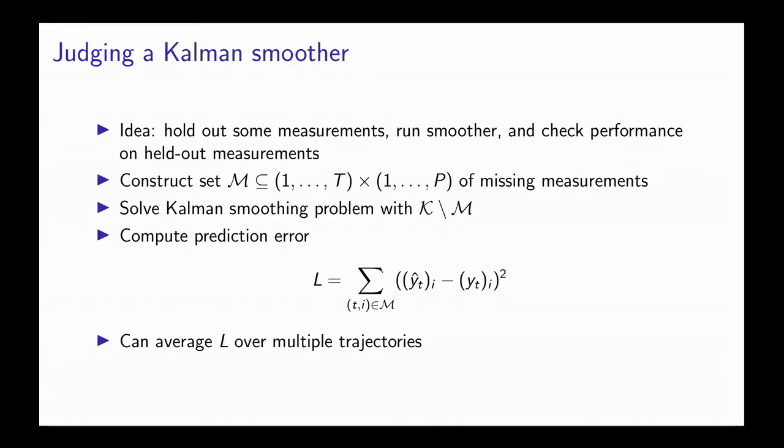This is just for a single trajectory of the system. We could also do this for multiple trajectories of the system, compute L for each one separately, smoothing each one, and then average that to get an aggregate L. You could consider a trajectory in machine learning terms as a single data point, and we could have multiple data points.